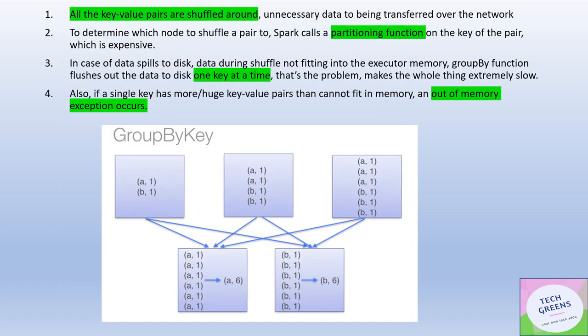But the ReduceByKey operation is optimized from the fact that it has minimized the shuffling to the lowest. Now let's see how GroupBy works. If you see GroupBy, in GroupBy there is no sort of summation or lambda function applied at the individual partition level.